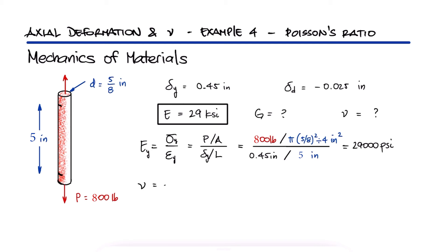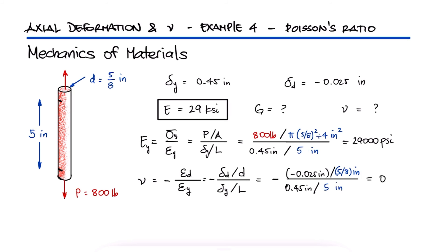Poisson's ratio can be found if we have the lateral strain and the axial strain. Each one of these strains will be the change in dimension over the original dimension. Substituting the values, we find a Poisson's ratio of 0.4 repeating.